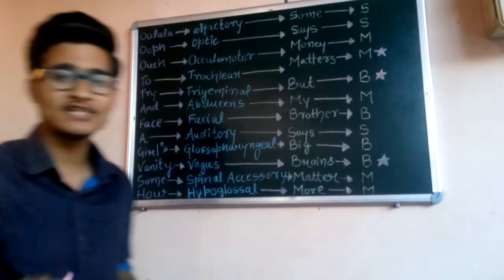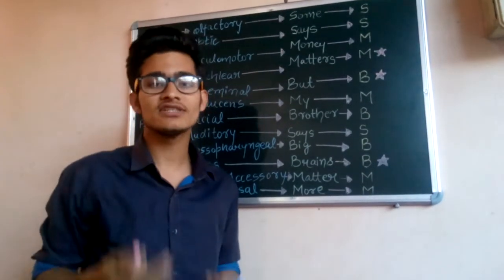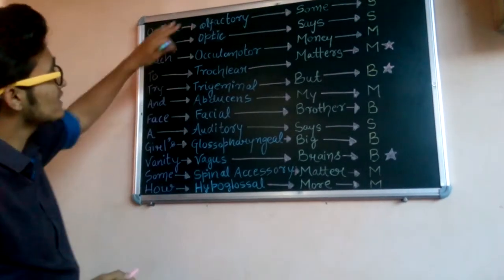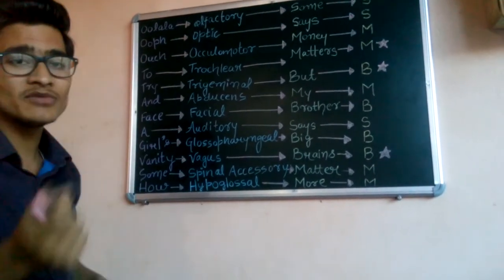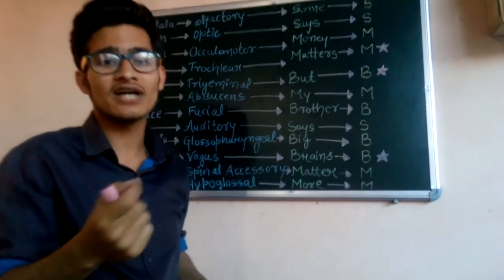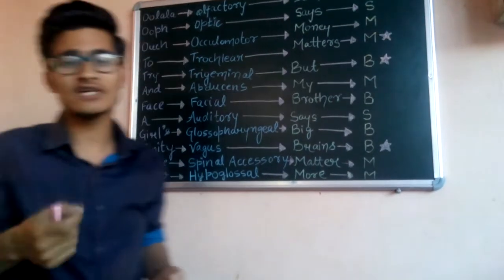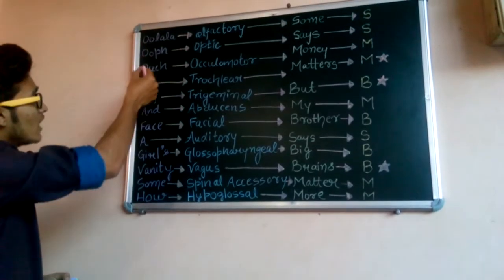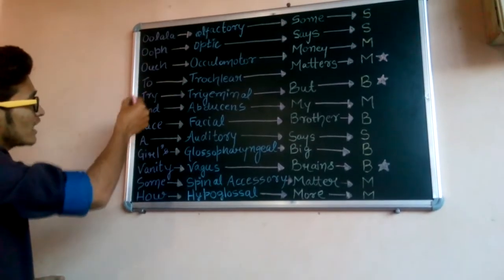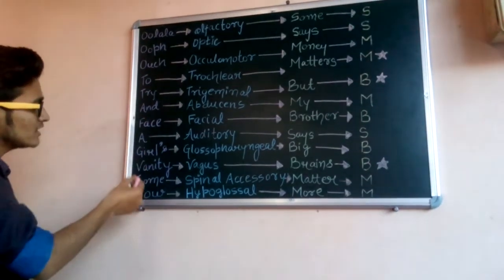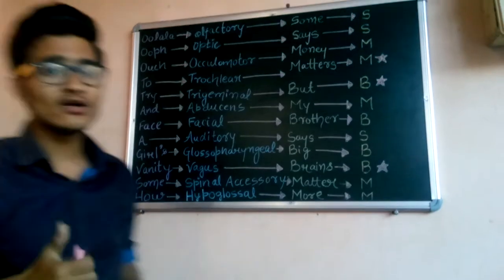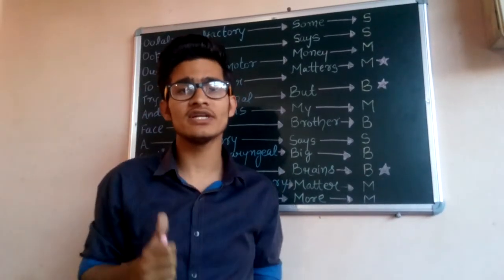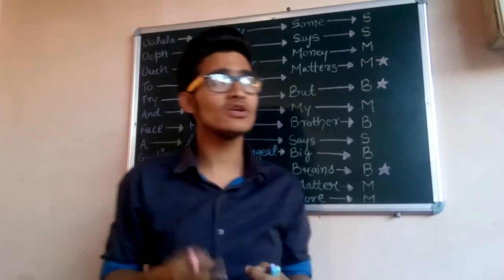Let's begin. The first cranial nerve in the human body is olfactory. First, let's memorize the mnemonic, which is the trick: 'Oolala, ool to try and face a girl's vanity somehow.' These are the three cranial nerves which have a similar kind of spelling or similar kind of starting letter. We just have to memorize this simple mnemonic.